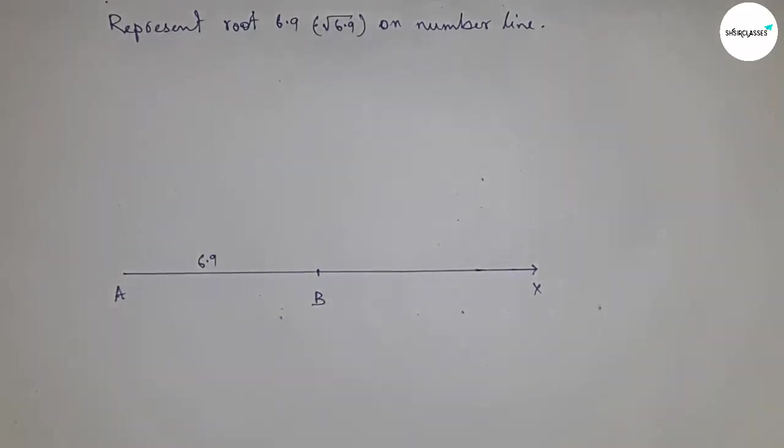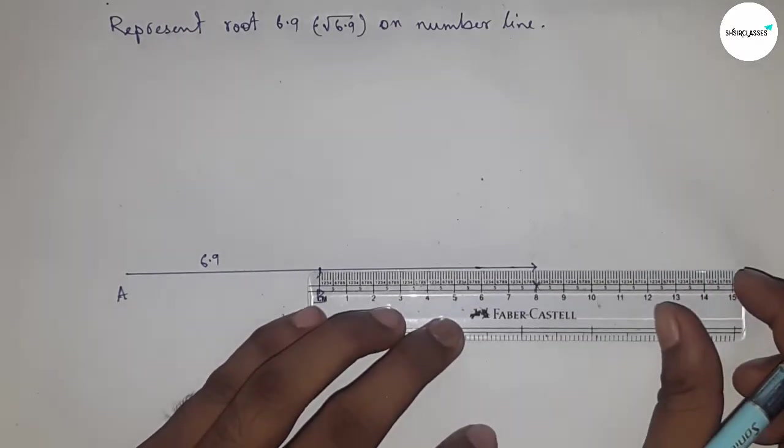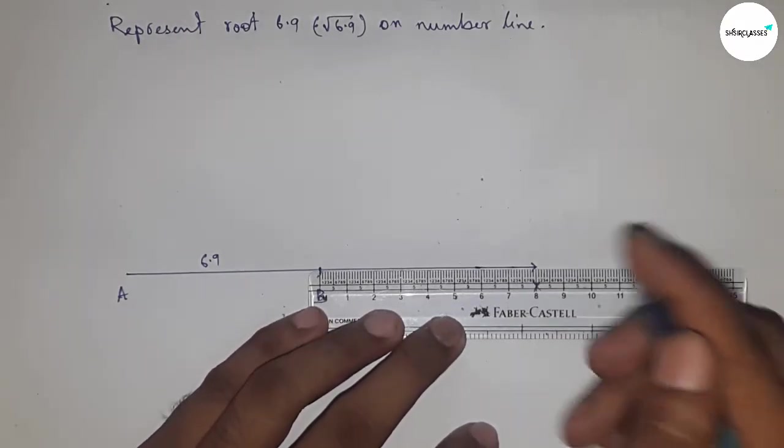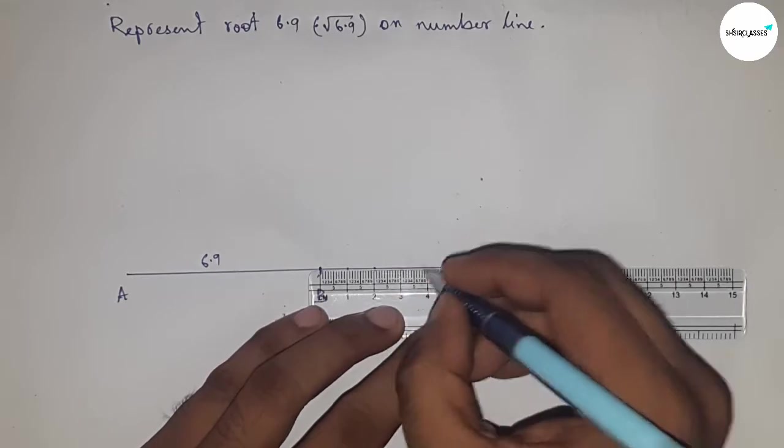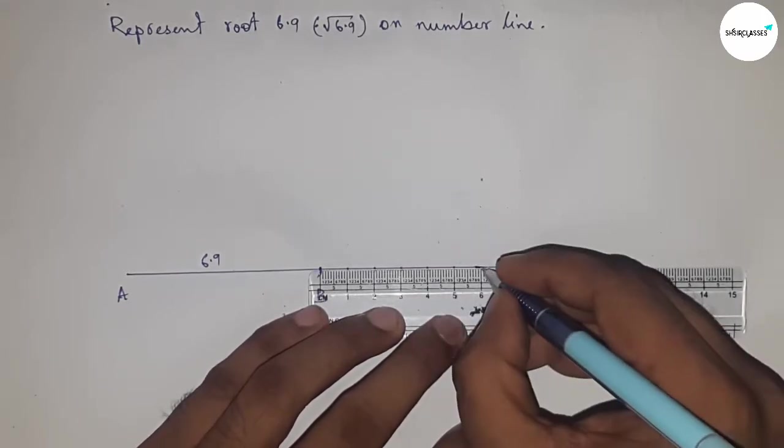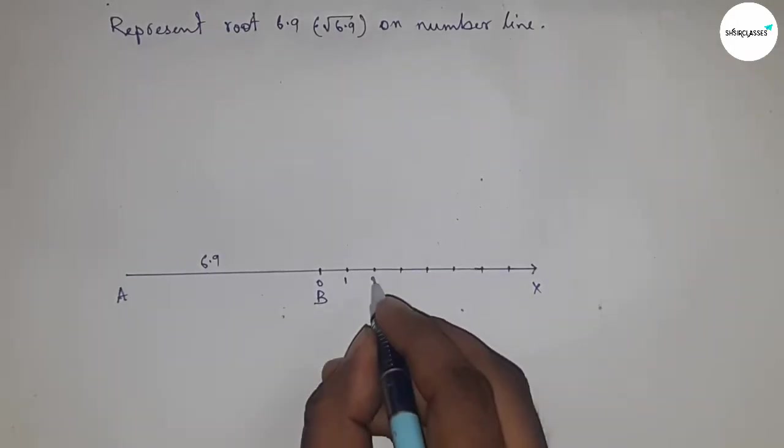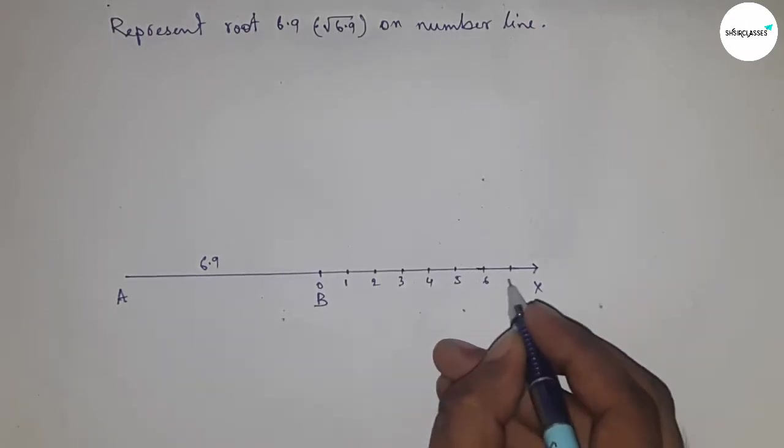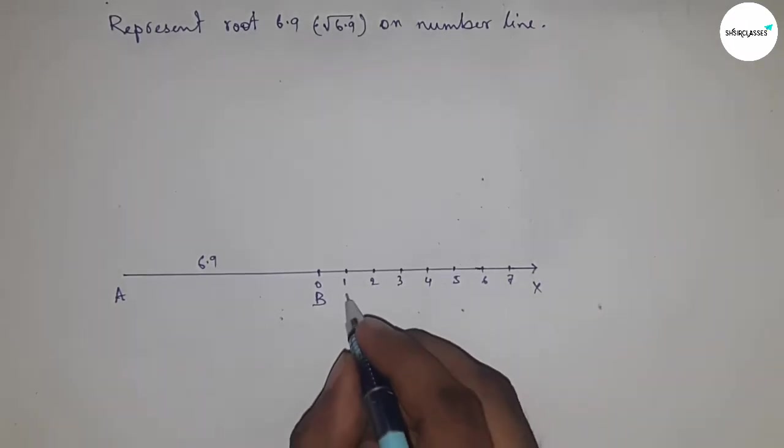Now we have to mark the numbers on the line from B to X by using scale. Mark 0, 1, 2, 3, 4, 5, 6, 7 and so on, and take this as point C.